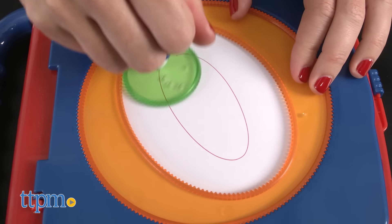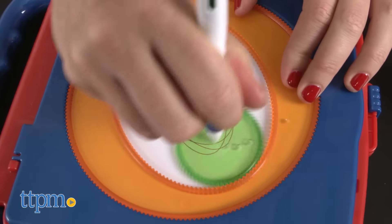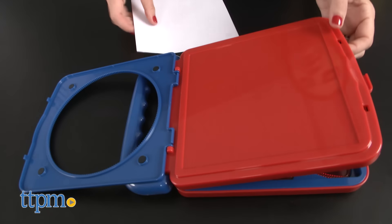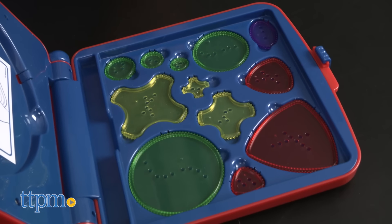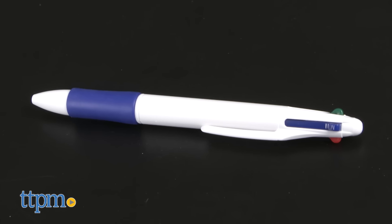It's a complete set that allows kids to create spiral designs. A carrying case that stores all the pieces and doubles as a work surface, 12 spiral designers, 2 guides, 1 4-color pen, and 20 sheets of square paper are included.